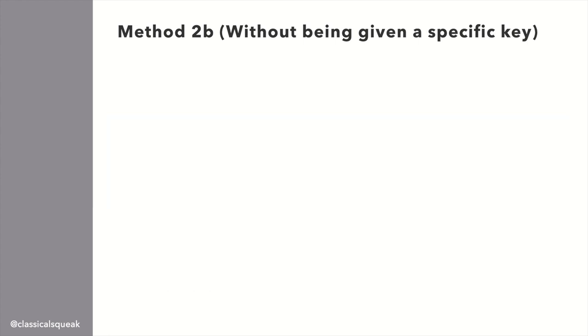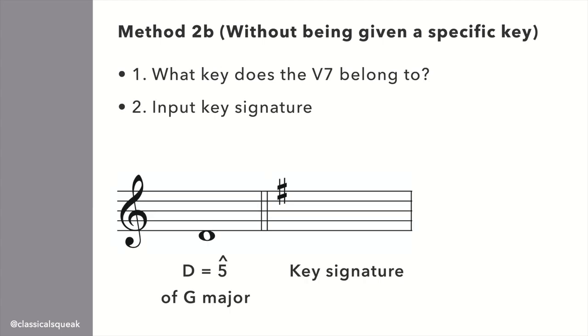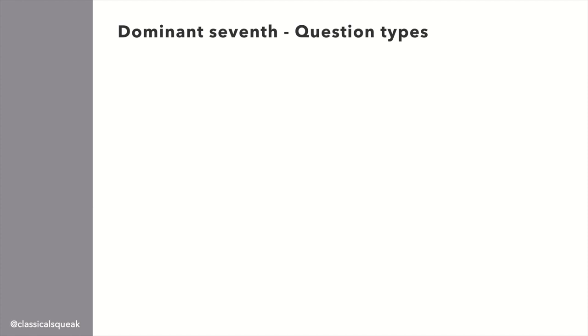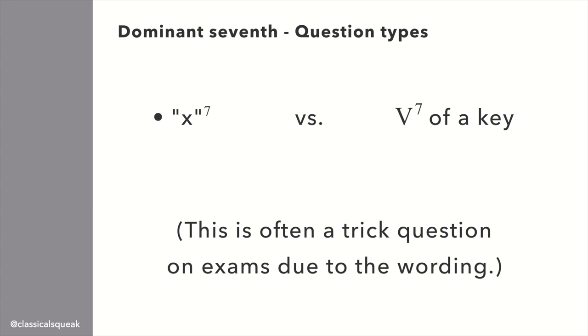One more way to figure out D7 is that you already know it's a dominant 7th. D is the 5th note of the G major scale, and G major has an F sharp. So if I stack in 3rds and add the key signature, we have D, F sharp, A, C. There is a difference between asking for a C7 chord versus the dominant 7th of C major. A C7 chord is C, E, G, B flat. The dominant 7th of C major is G, B, D, F. This is often a trick question on exams due to the wording, so I'm mentioning it just in case.